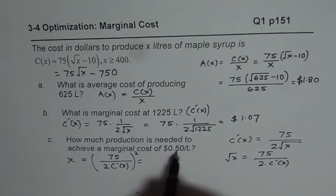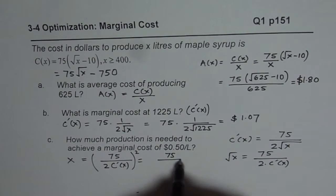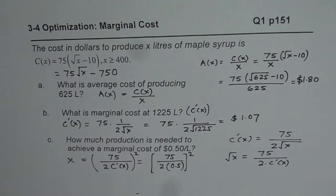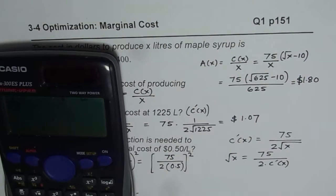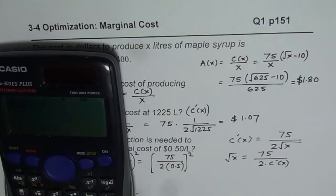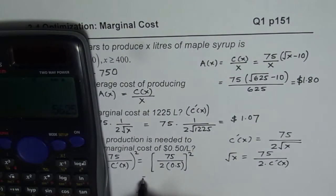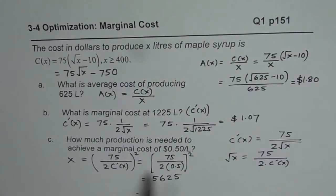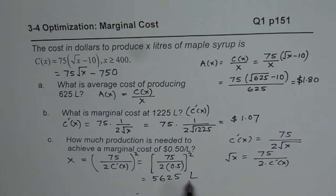Substituting 50 cents, which is 0.5, we get x equals (75 divided by (2 times 0.5)) squared. Since 2 times 0.5 equals 1, this becomes 75 squared divided by 1, but let us compute: 75 divided by (2 times 0.5) equals 75, and 75 squared gives 5625. So 5625 liters must be produced to achieve a marginal cost of 50 cents per liter.